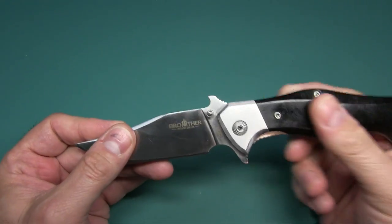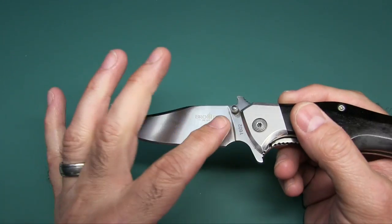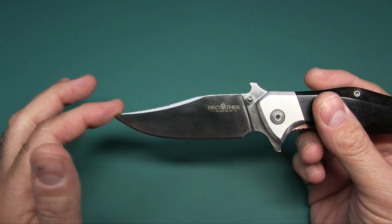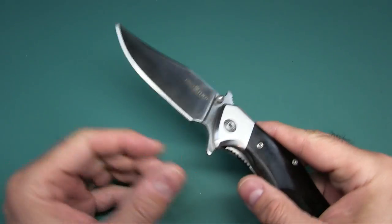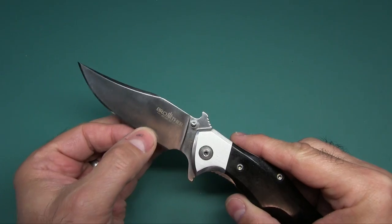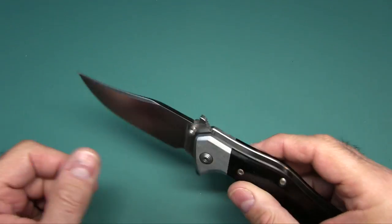Next, let's talk about the business end of this blade. It's 440C stainless steel. That's a very good American stainless steel. And it is a full flat grind. This can be considered a bowie or a clip point, whatever you want.